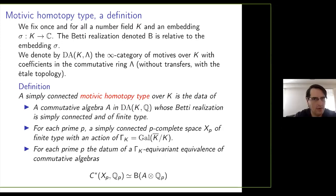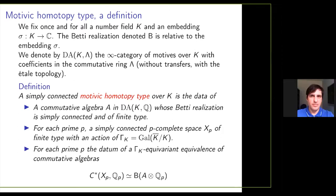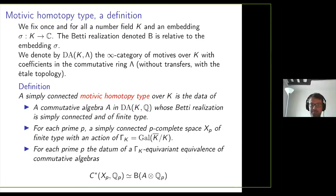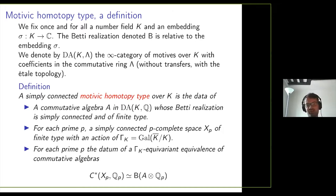A commutative algebra in DA(k,Q) is a commutative monoid object. I should emphasize that the notation DA(k,Q) is usually used for the triangulated category of motives, but here I'm really working at the infinity categorical level. So a commutative algebra is more data than just a commutative algebra in the triangulated category.